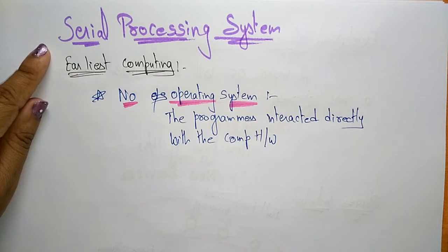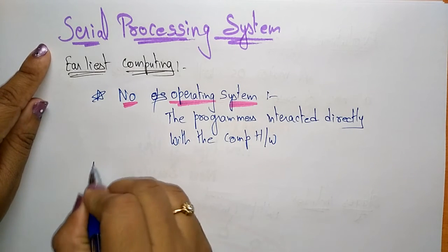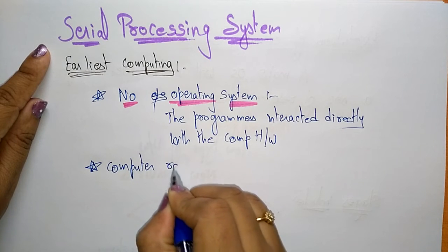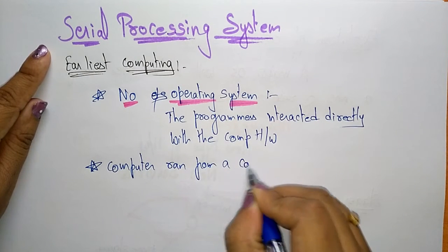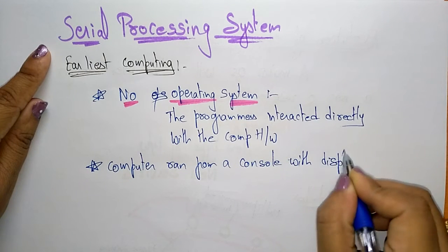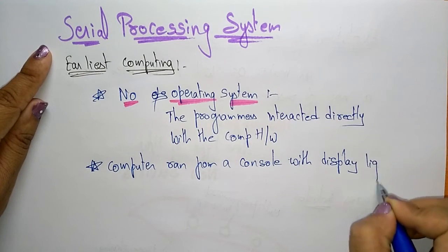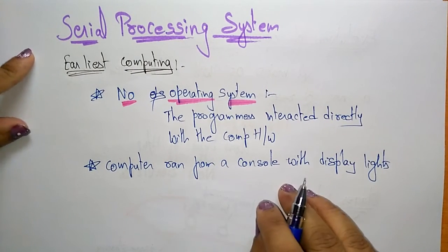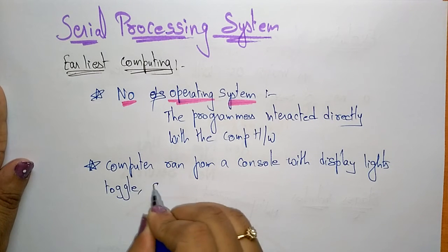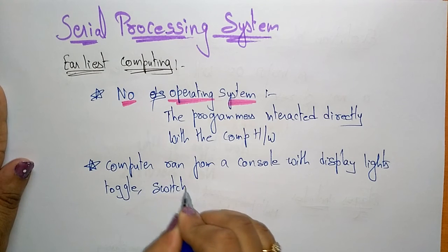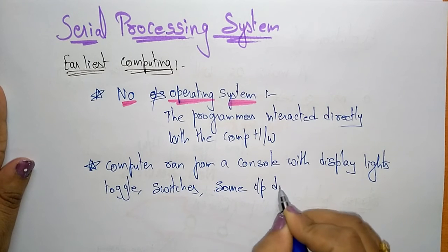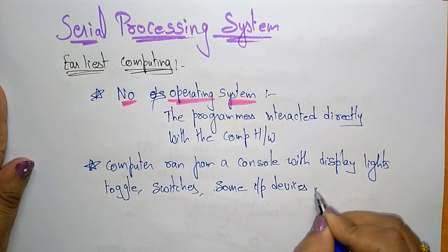In those days, computers ran from a console with display lights. They used the console with toggle switches or some input devices, and a printer.